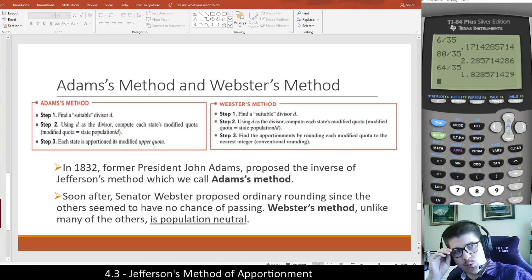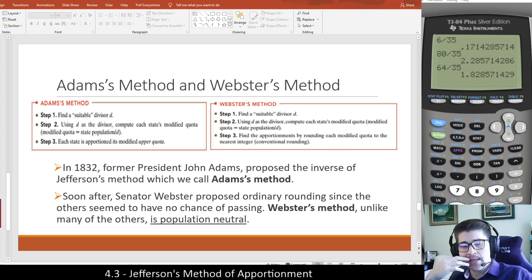Moving into section 4.4, we're going to talk about a couple more methods of apportionment. The book kind of follows a historical path of what methods were used in what order. Next up is Adams' method and Webster's method, which are both in section 4.